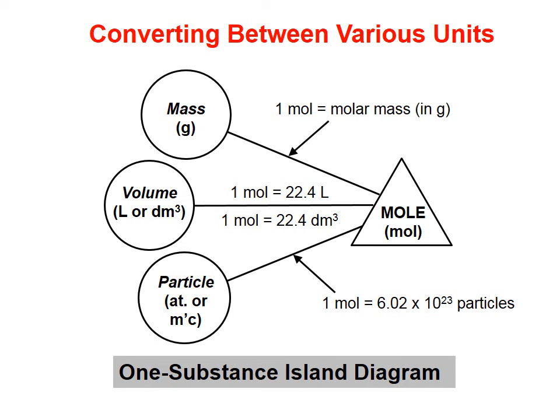This diagram is sometimes useful in helping students get an idea of what needs to be done to convert between various units for a given substance. You'll notice here that mole island is a different shape, which means somehow it's special compared to the other three islands on the left.